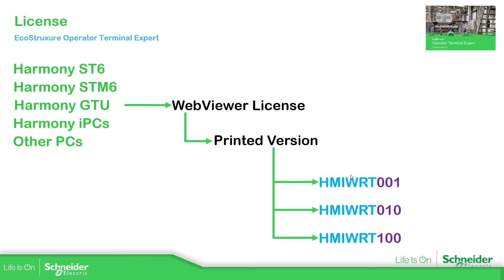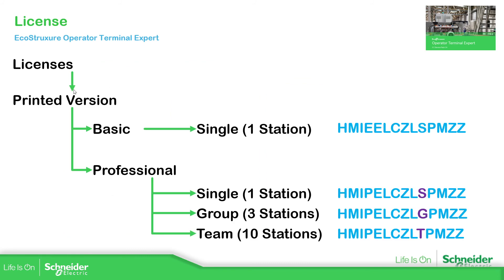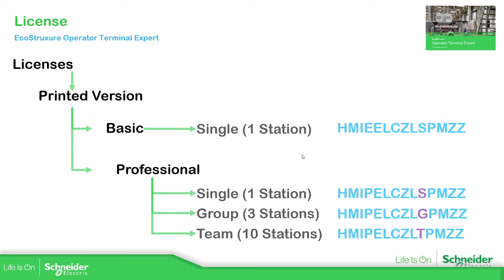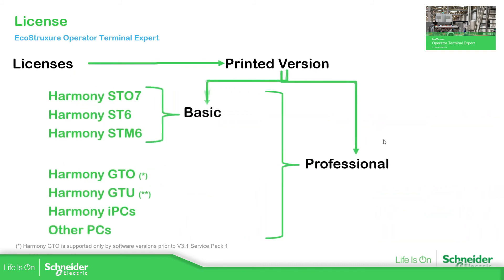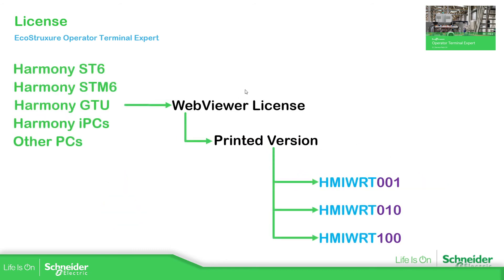So this is the complete offer — the different licenses we have for EcoStruxure Operator Terminal Expert. As a quick reminder: to program the software we have the printed versions, basic and professional, which allow us to program the HMI on your laptop. If you are using an IPC or PC you will require a runtime license. And if you want to monitor or control the HMI remotely using your laptop, you can use the web viewer, which has three different licenses: one enabling a single HMI, one enabling up to 10 HMIs, and one enabling up to 100 HMIs.